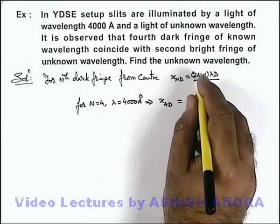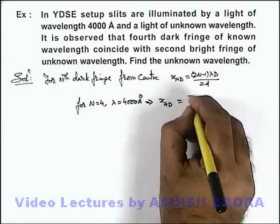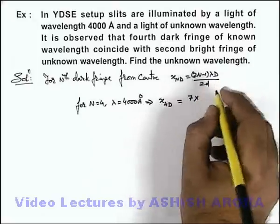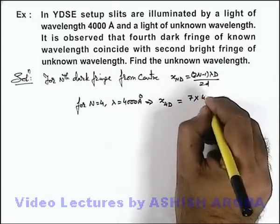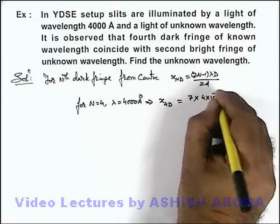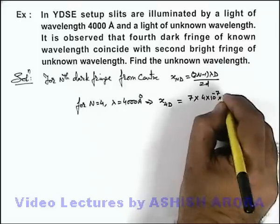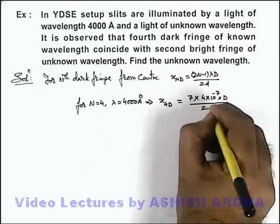wavelength is 4×10^-7 multiplied by D divided by 2d, divided by twice of small d.